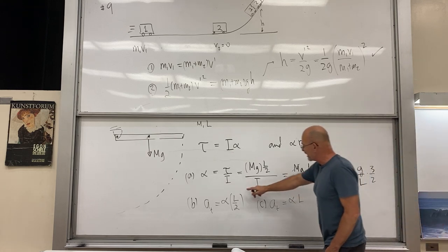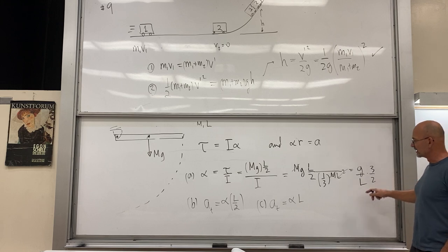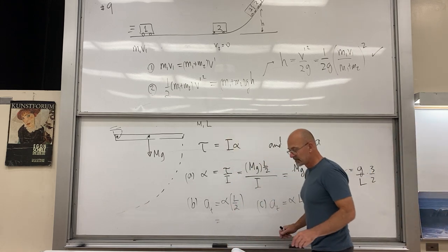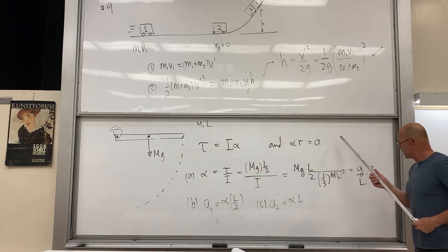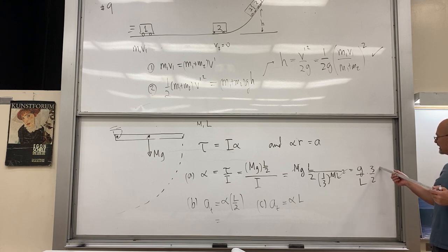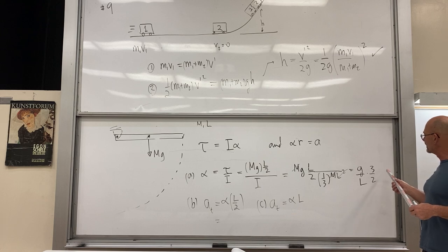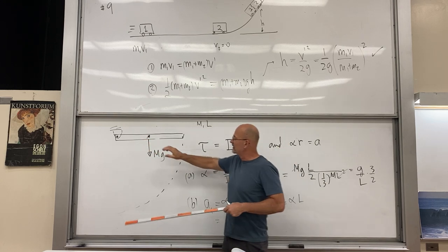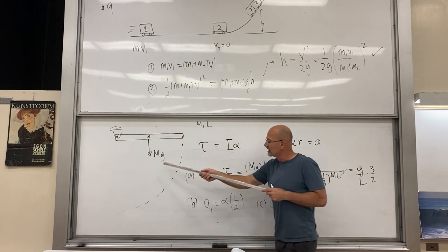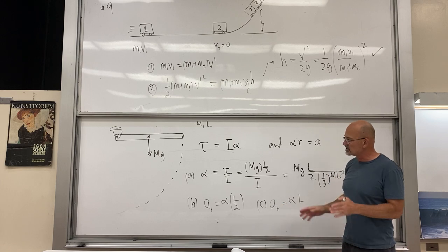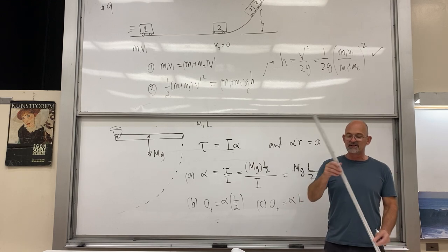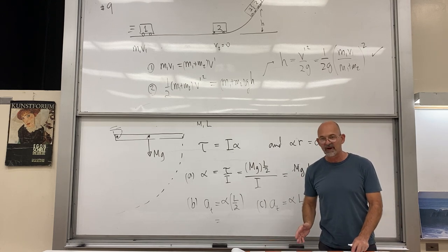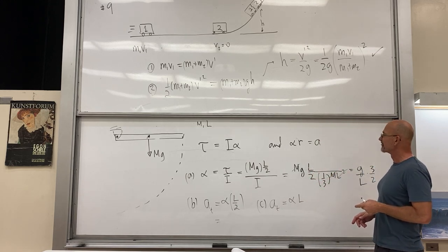So part b gives 3g/4, which is less than g. But part c gives 3g/2, which is 1.5 times g — greater than g. The end of the rod accelerates faster than free fall. This is actually the explanation for why towers that tip over snap on the way down. That's an important point.